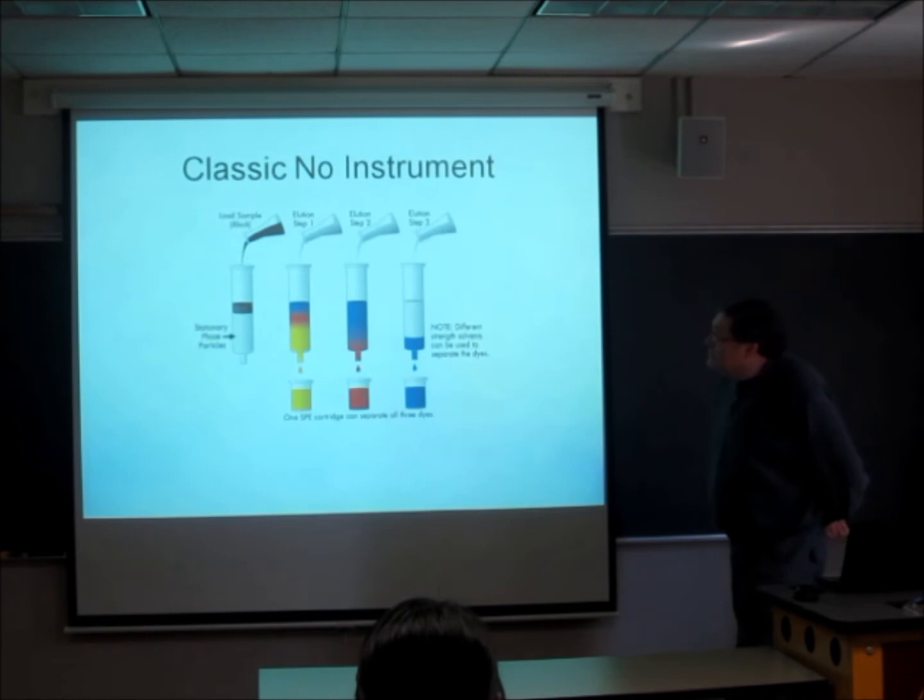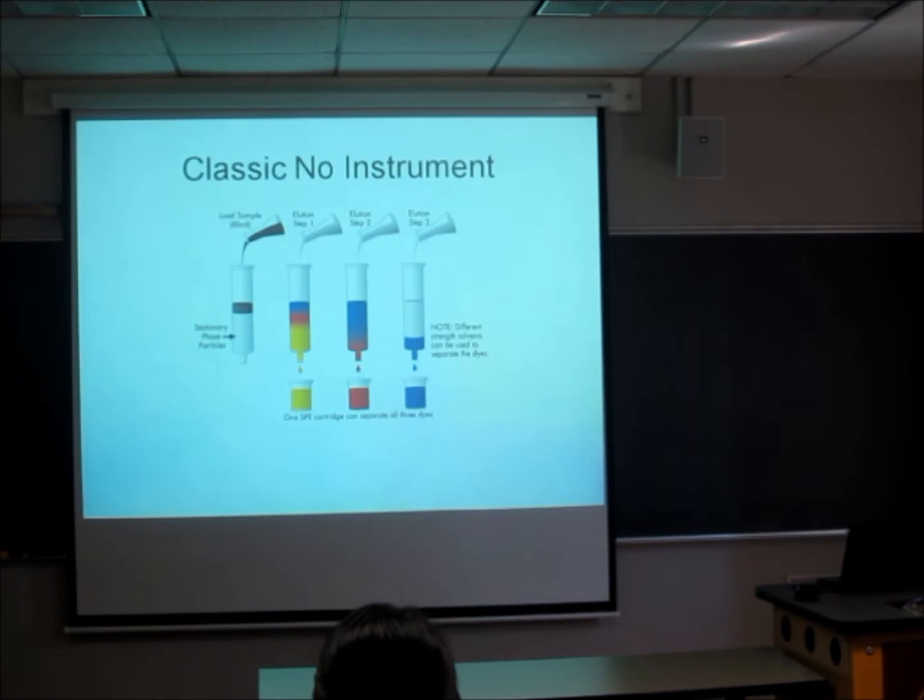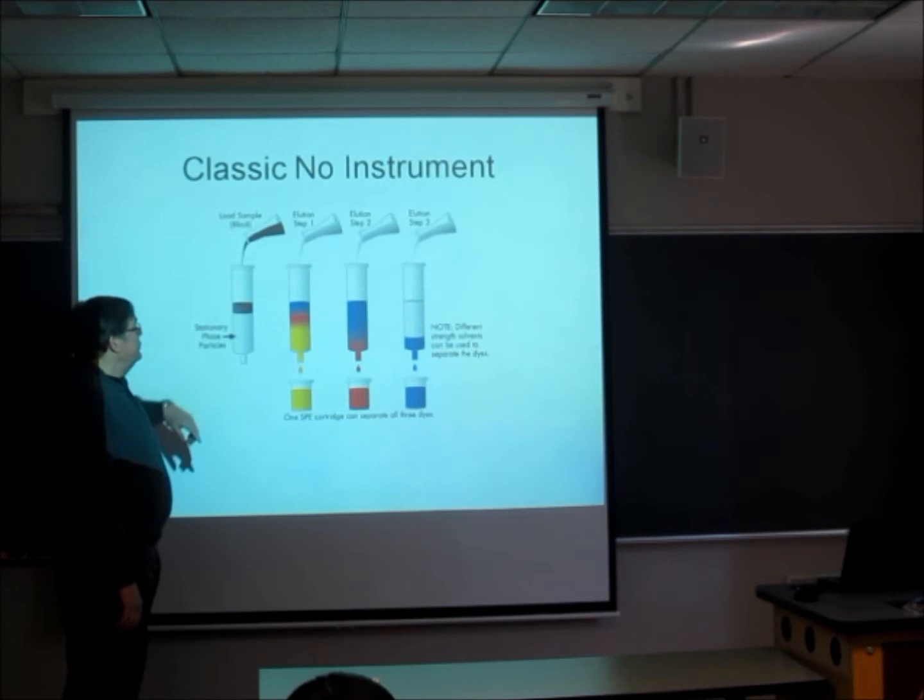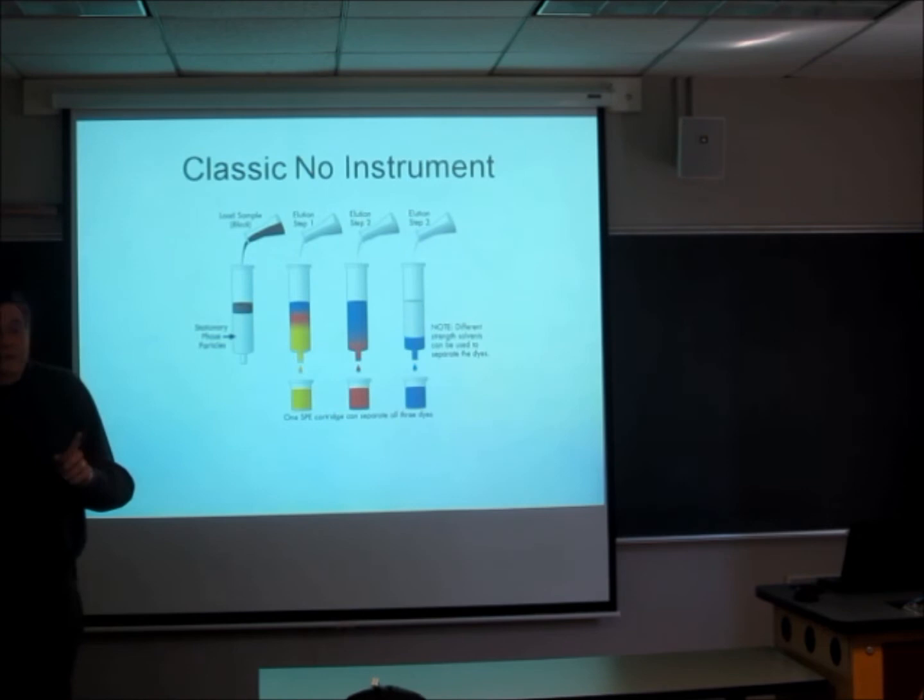Here's a classic column chromatography experiment, mostly put up here because the colors are pretty. We're going to take a complex mixture, colored black here, and put it into a column below the top of the column. The column has stationary phase particles. For this kind of chromatography where we're relying on gravity to move the mobile phase through, the particles are going to have to be pretty large so that it's possible for the fluid to flow around the particles.